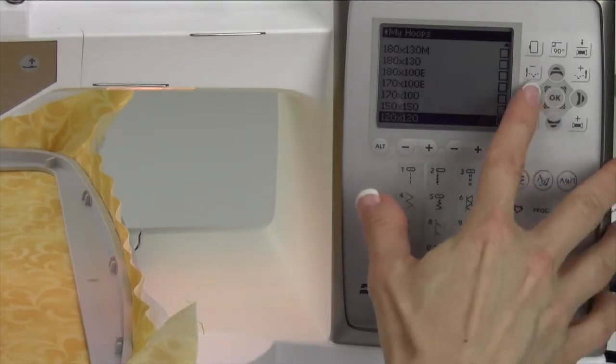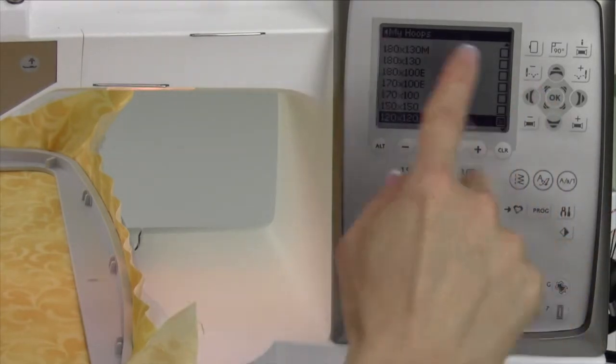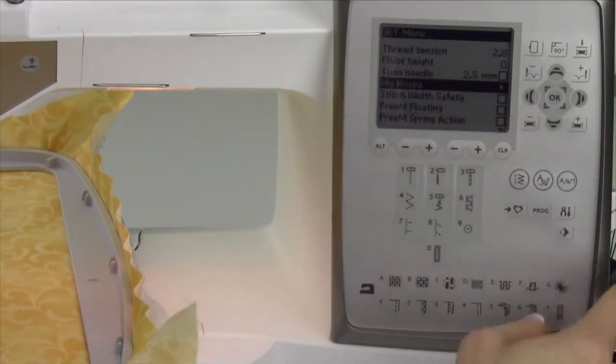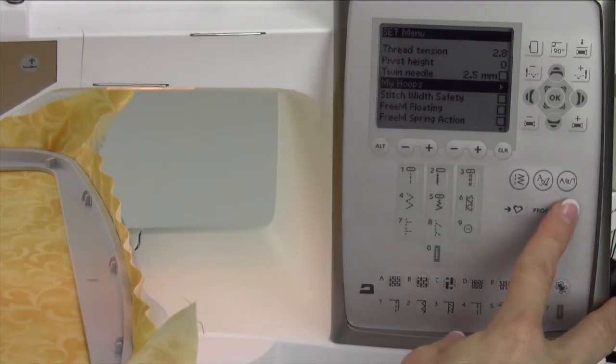Now, when you go out of here, I'm going to just arrow to the left to come out of my hoops, and then I'm going to touch the set button to go out of the set menu.